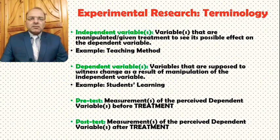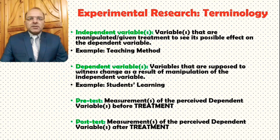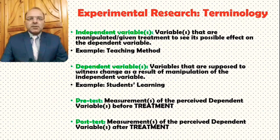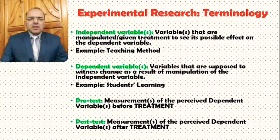Generally there are two types of variables in experimental research. Independent variables are variables whose effect we are interested in seeing on the dependent variable. These variables are manipulated or changed in order to see the possible effect of that change on the dependent variable. For example, in the context of education, teaching method could be taken as one of the independent variables, and manipulation of the teaching method might have an effect on student learning.